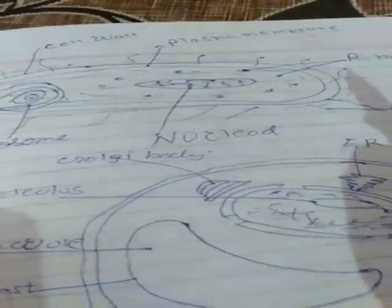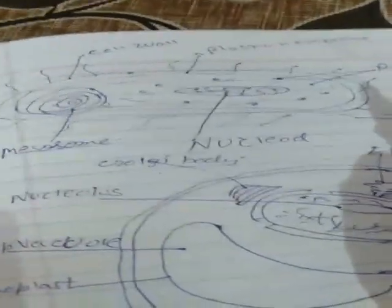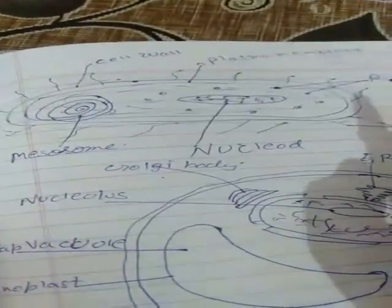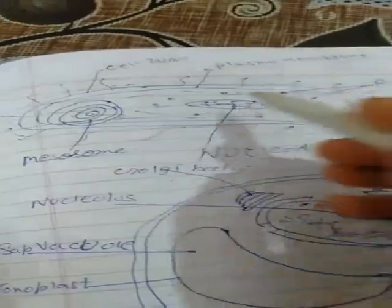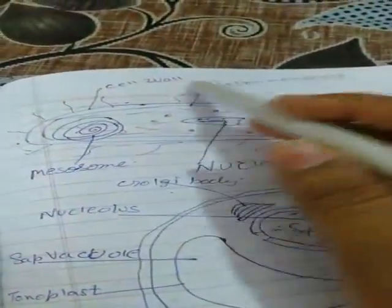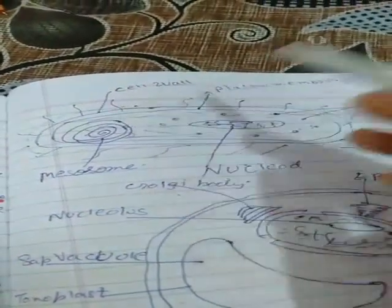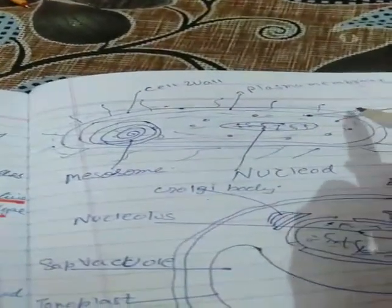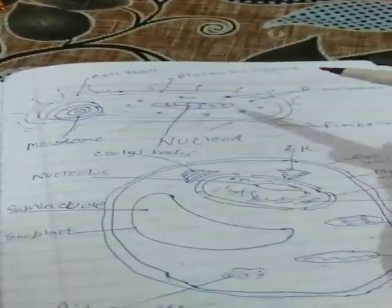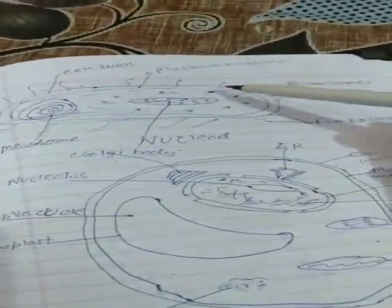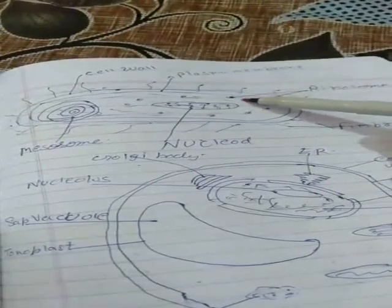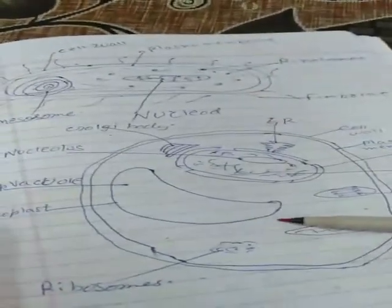Now let us discuss the diagram — you all have to draw this diagram. This is the diagram of the prokaryotic cell. According to the characteristics we discussed, you will see it is the primitive one and smaller in size.